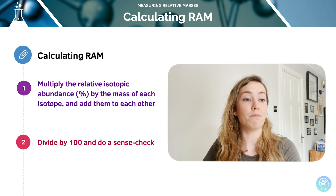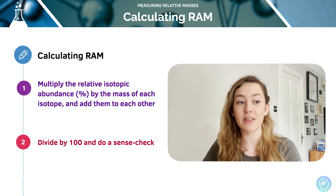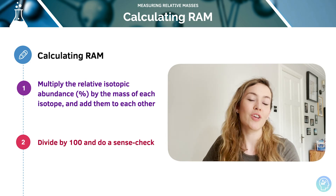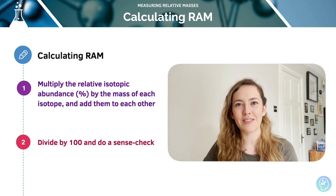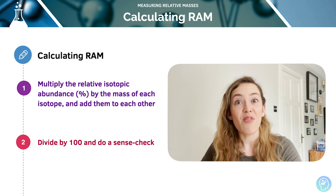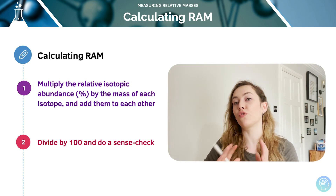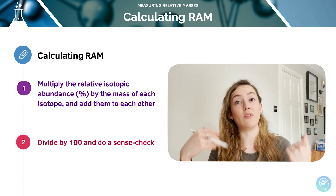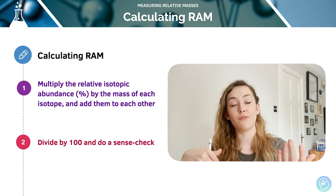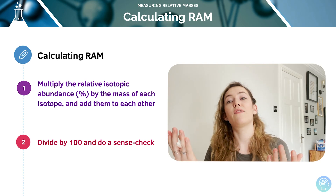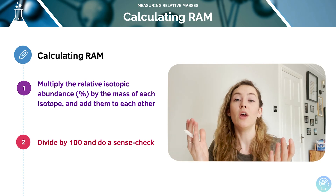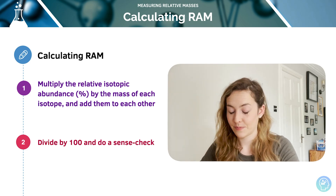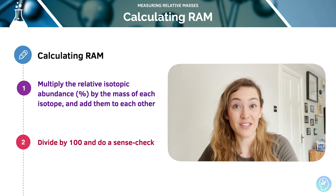First of all, we're going to multiply the relative isotopic abundances by the mass of each isotope. Then we're going to divide by 100, or divide by the sum of the abundances — you need to check your y-axis. Then do a sense check, because that number should fall between the isotope values you have. We had chlorine-35 and chlorine-37, so the relative atomic mass of chlorine should be a number between 35 and 37 — and it is: 35.5.